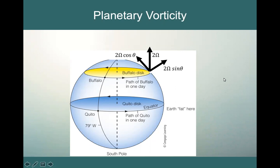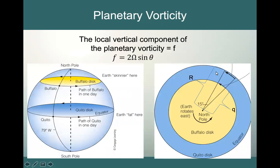And what we're interested in for our planetary vorticity, as we mentioned before, is that vertical component. So what we're interested in is that 2 omega sine theta. And we see that 2 omega sine theta, as we know, is equal to f.